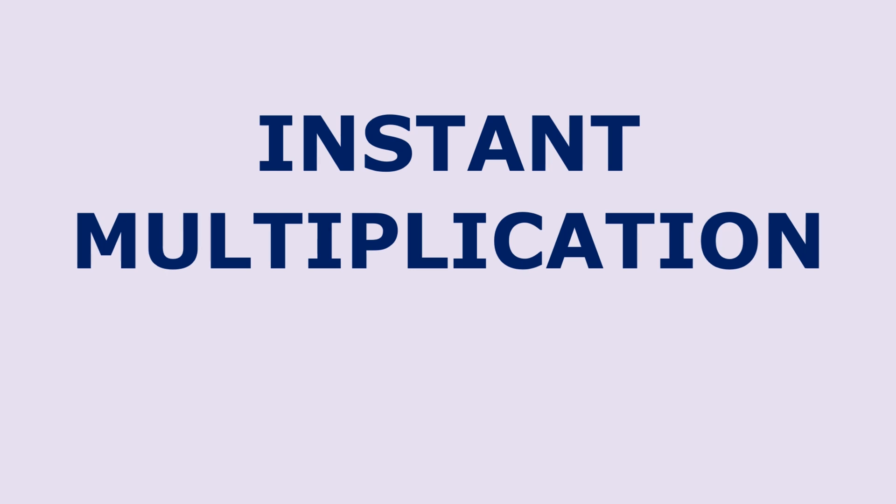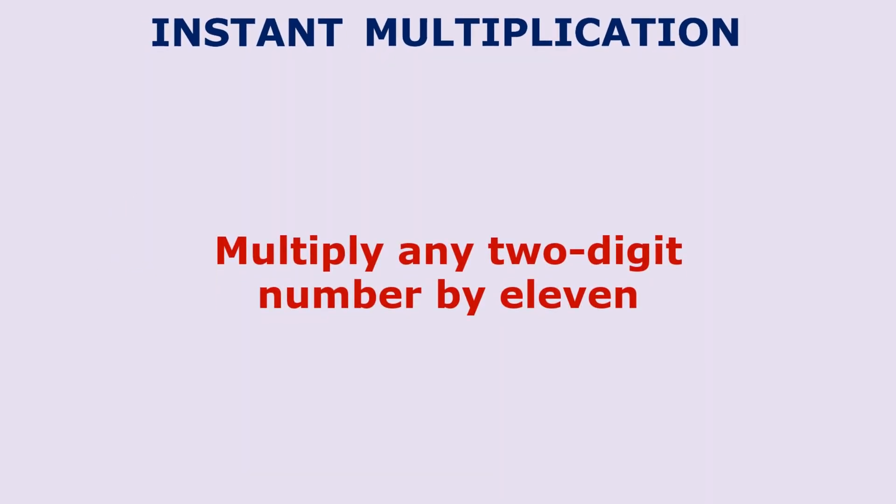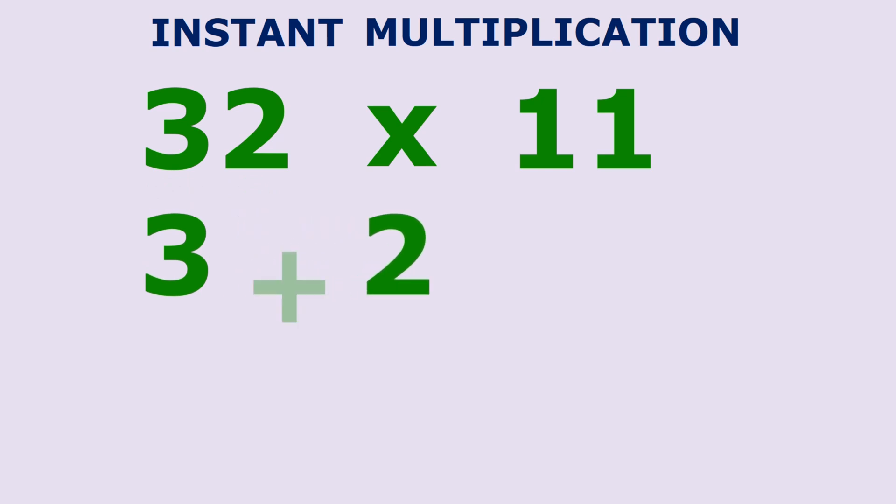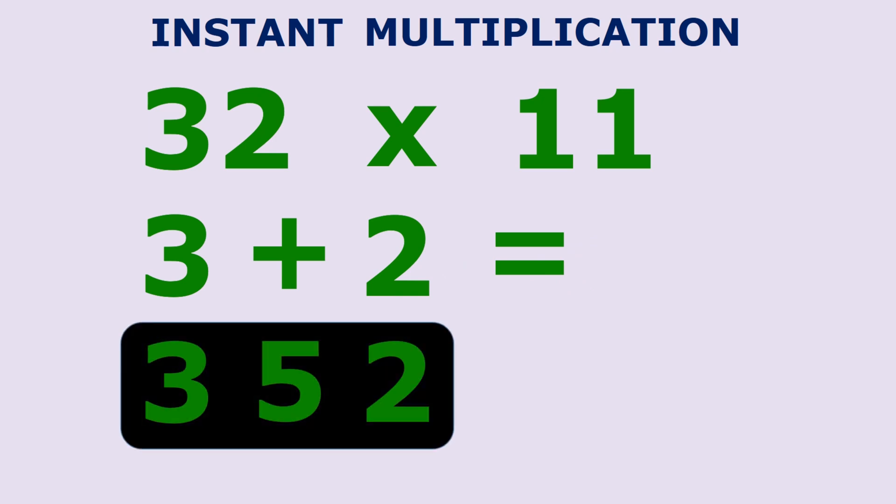Now let us see instant multiplication. Let's begin with how to multiply in your head any two digits number by 11. It's very easy once you know the secret. Consider the problem 32 x 11. To solve this problem, simply add the digits 3 plus 2 which is equal to 5. Put the 5 between 3 and 2 and there is your answer, 352. What could be easier?